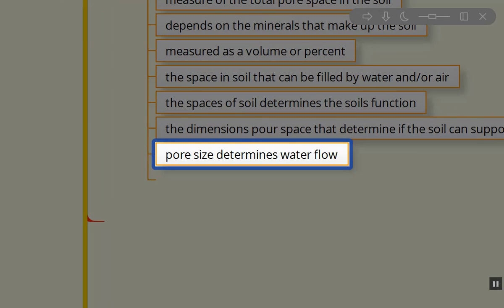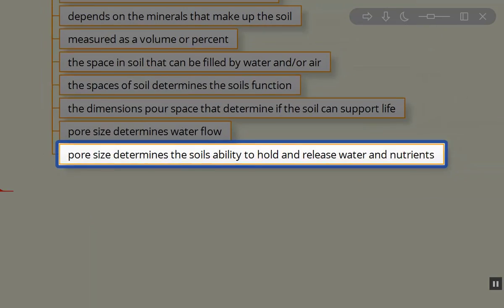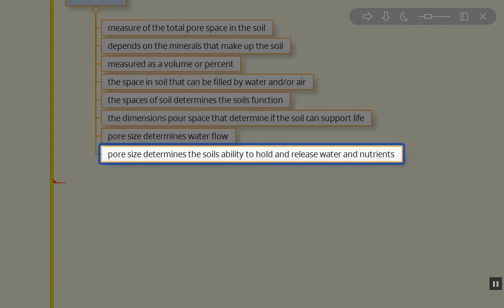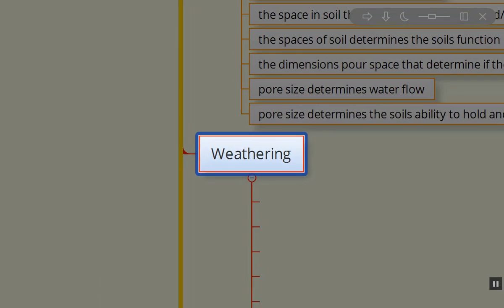Pore size determines water flow. For example, large particles like sand create large pores and therefore sand percolates or drains water rapidly. If you had a deep sand soil surface and subsurface, the precipitation from a rain event is just going to percolate right down through the sand and get right to the water table. Whereas, the pore size determines the soil's ability to hold and release water and nutrients, making them bioavailable to the microorganisms and the plants that are there or the plant roots.